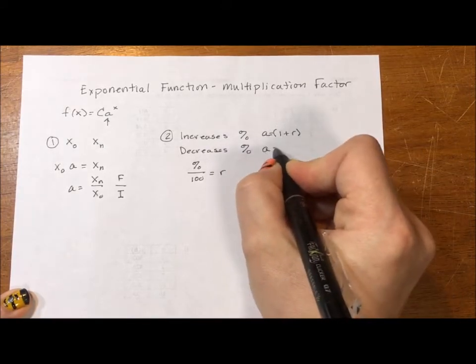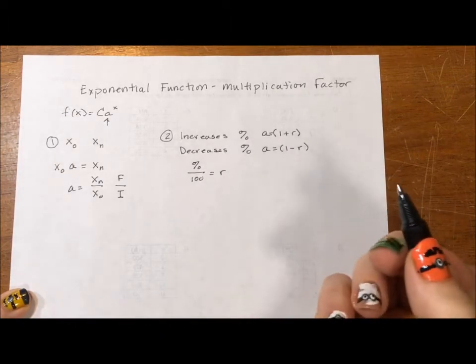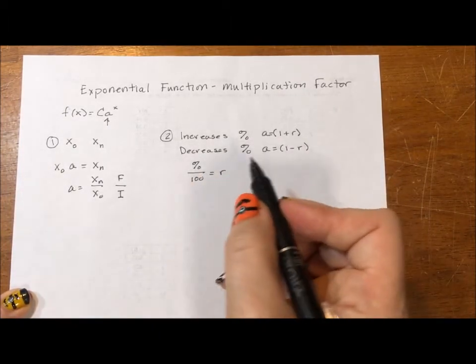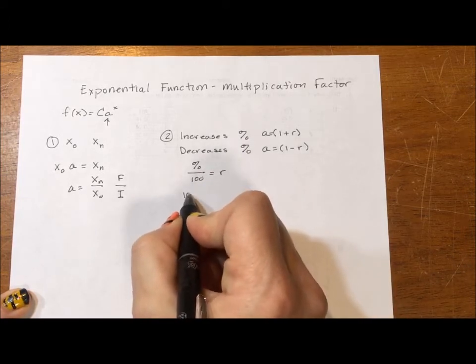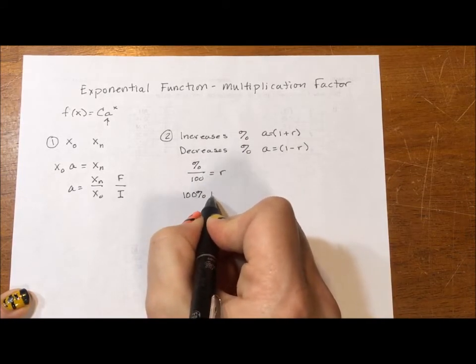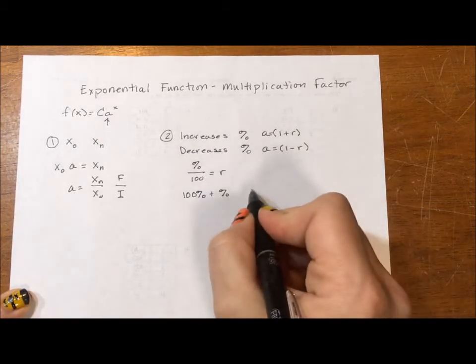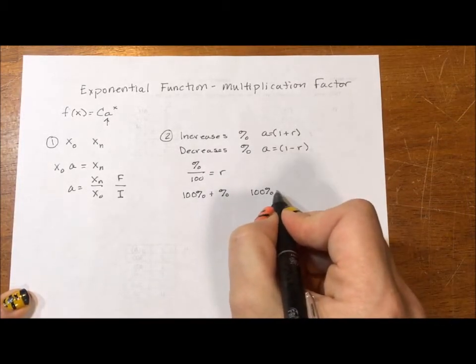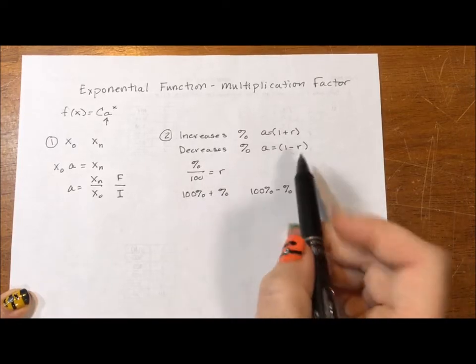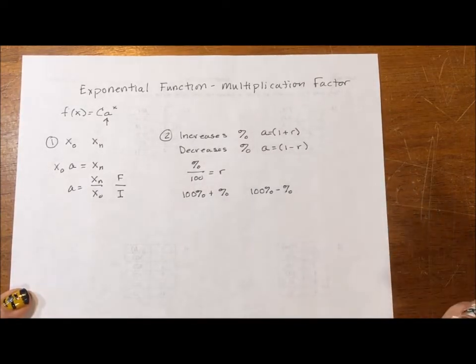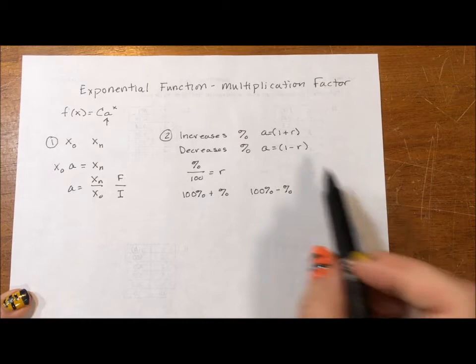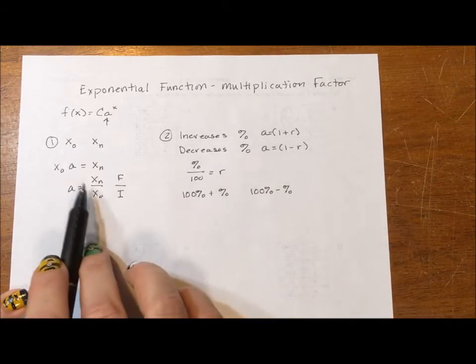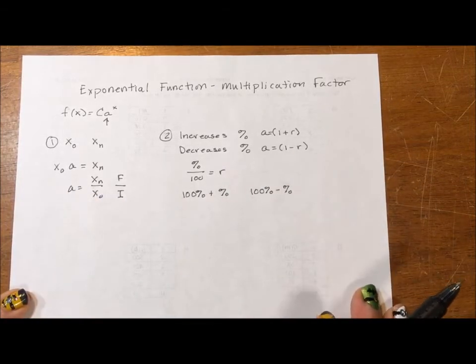If it decreases, a is equal to one minus R. We do one because what's happening in our initial is we don't have two numbers. We just have a percent. So we have to think of this as a hundred percent plus whatever rate is being increased or a hundred percent minus that percent. We only use this one plus or minus if it is a percent, if it is a rate, if it is a percent increase or percent decrease, if it is growth or decay. That's the only time we have this one. You don't use the one over here. You don't use the one in other cases.